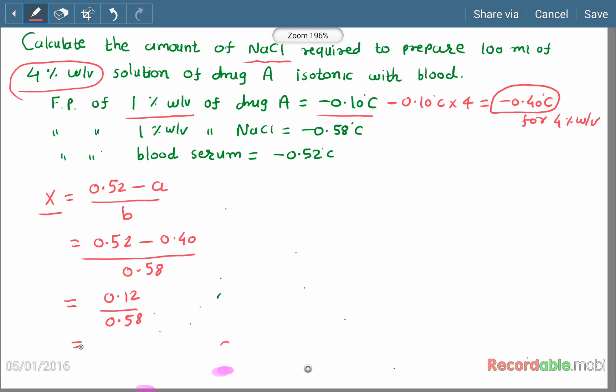This equals 0.206, corresponding to 0.21 grams of sodium chloride per 100 ml of solution. So 0.21 grams is the answer.